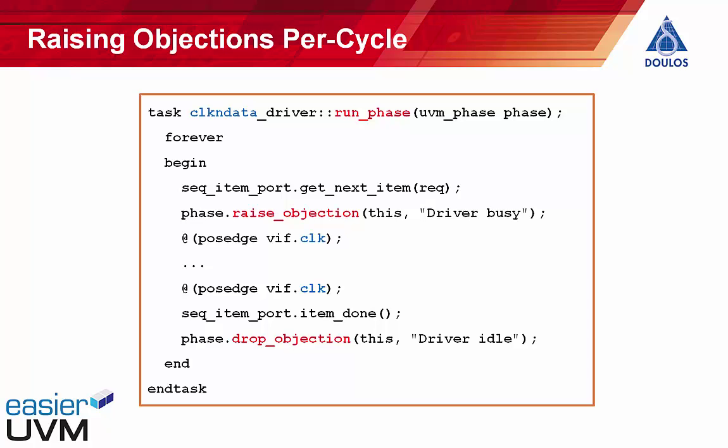Another place to raise and drop objections is on a per-cycle basis within a driver, monitor, or scoreboard. A driver grabs the next transaction, raises an objection to signal that it's busy, drives the transaction into the design under test over potentially multiple clock cycles, then drops the objection when finished. This is the right way to think about objections — any UVM component or sequence that's doing something can raise an objection to extend the test for a bit more simulation time. A driver might inject stimulus, a transaction might then come out the other side and be propagated to a scoreboard that has to do checking, and we don't want the test to end until the scoreboard has finished.